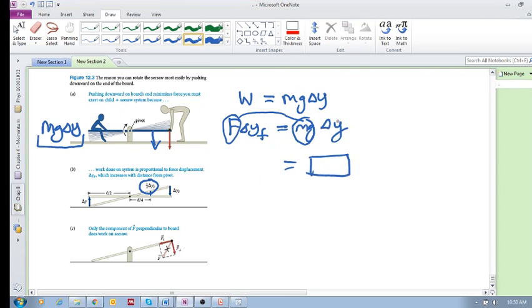if I've got half delta y_f, then I need two times F in order for it still to equal this mg delta y. So you can see that as you're moving closer, you require a larger force. It's still the same work, same work.